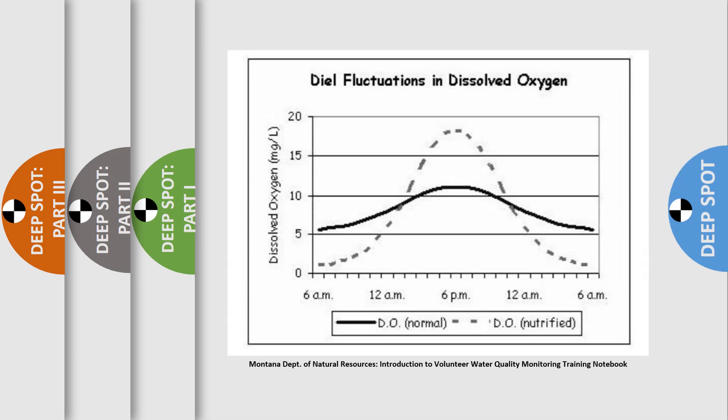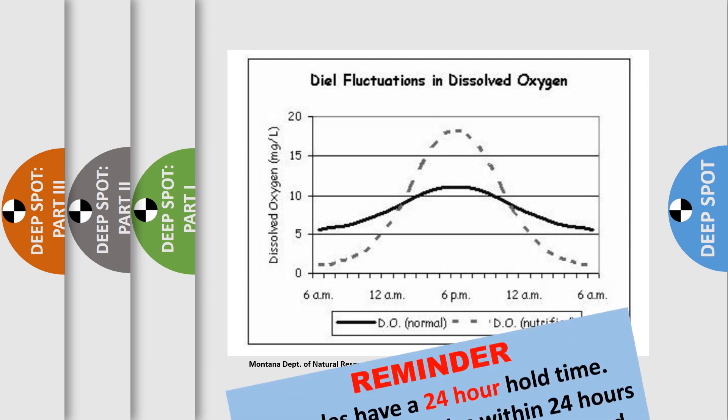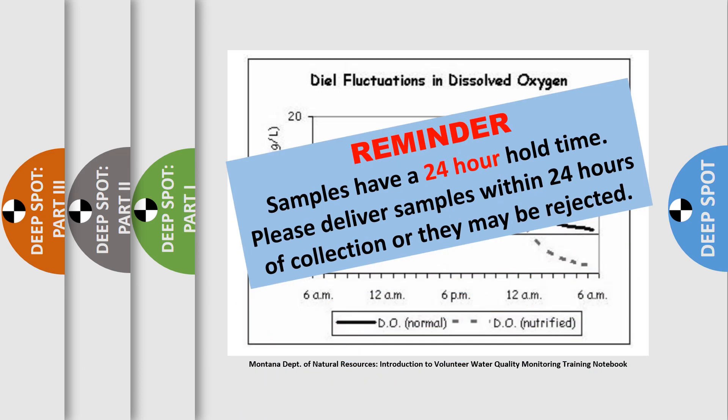We recommend sampling your deep spot once per month during the summer and between 10am and 2pm during peak lake productivity. If you choose to sample on the weekend, sample on a Sunday afternoon to allow for samples to be analyzed within the 24-hour hold time on Monday.